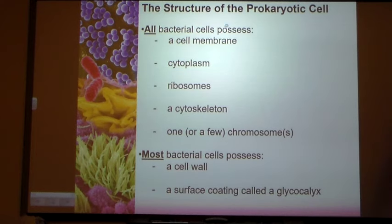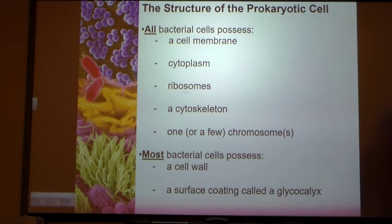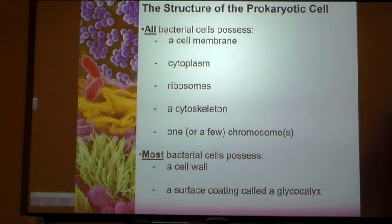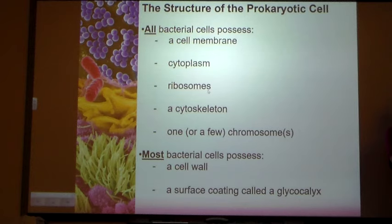Looking at the structure of prokaryotic cells, all cells possess these things: cell membrane, cytoplasm, ribosomes to make proteins, and some form of cytoskeleton, which is an internal support structure. Eukaryotic cells have a lot more organelles, but bacteria still have the basic cell membrane. The cell membrane, ribosomes, and cytoskeleton are universal to all life forms.